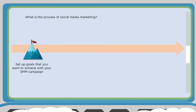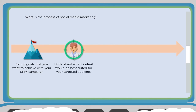You want to set up goals you want to achieve with your social media campaign, because just posting content for content's sake won't generate anything for you. Set up those goals ahead of time, then understand what content would be best suited for your target audience. If your goal is to generate brand awareness, maybe an infographic is the best asset choice.